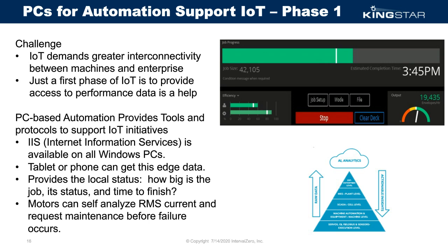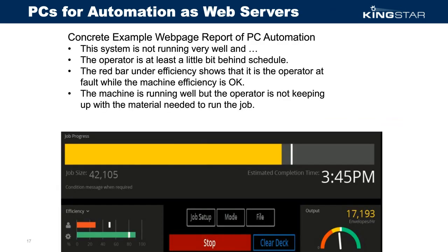Here's a concrete example: this overall system is having problems. Under the red bar, by efficiency, the operator is falling behind — the machine is doing fine. A manager anywhere on the floor can see this from a phone or tablet. This operator really needs to load material faster and get finished mail off the machine.